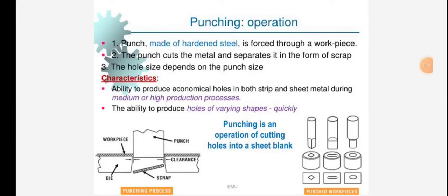Welcome back friends, we are studying the subject manufacturing process, specifically sheet metal forming process. In this we will see punching operation. A punch made of hardened steel is forced through a workpiece. The punch cuts the metal and separates it in the form of scrap.